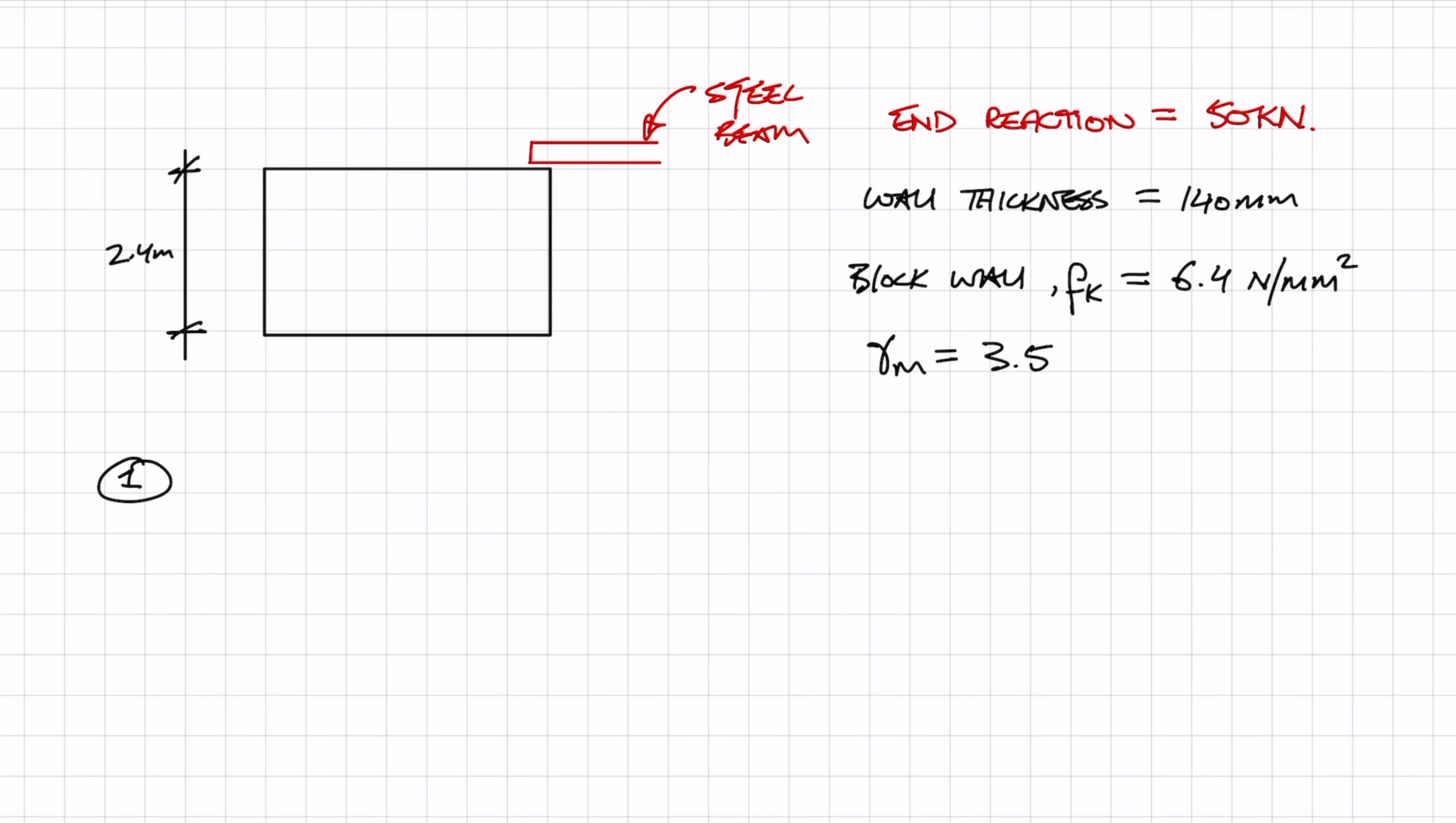There are basically three steps which you'll need to follow. The first being to check the stress underneath the beam, and this check is going to determine whether or not you actually need a spreader or a padstone. If the stress is low enough and you don't need a padstone, that's basically your design done.